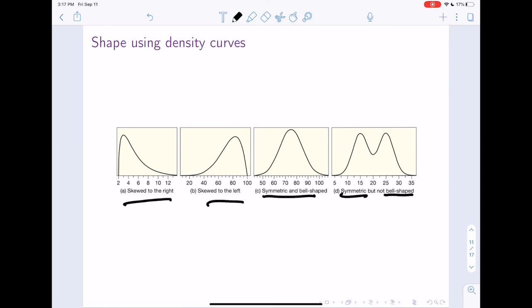So a density curve really is just a way of sort of drawing a curve over the histogram or over the dot plot to get a sense of the general shape.